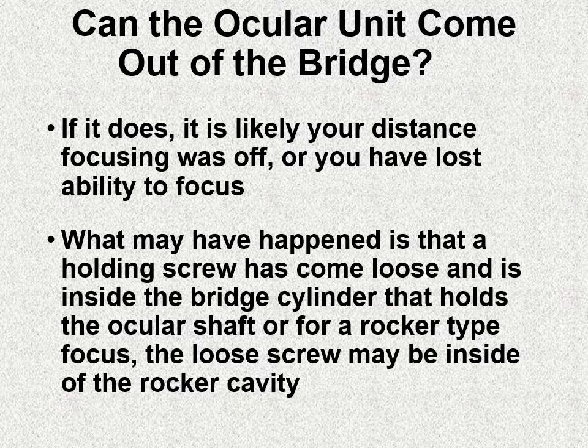Another problem is that an ocular can come completely out of the body, in which case your distance focusing may be off or lost entirely. What likely happened is that a holding screw came loose and is now inside either the bridge cylinder — for non-rocking lever binoculars — or inside the rocker compartment. You'll need to remove the rocker covering to re-screw it into the ocular shaft, or open the bottom screw and use a very narrow screwdriver to screw it back in. There should be YouTube videos covering that.